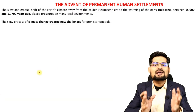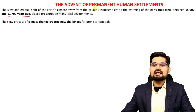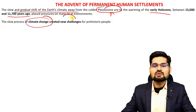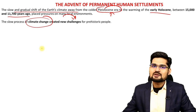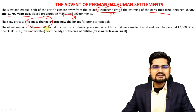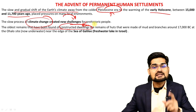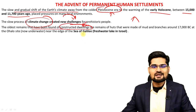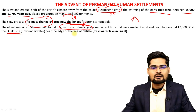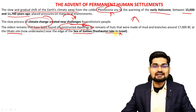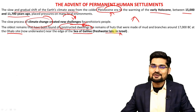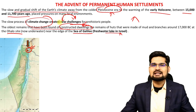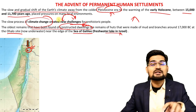The slow and gradual shift of Earth's climate led to the Pleistocene era's end and the beginning of the Holocene, during which climate change led to new land use developments. The oldest remains of constructed dwellings come from approximately 15,000 to 17,000 BCE. These include the Ohalo site and the Sea of Galilee — a freshwater lake in Israel in the Levant region. The people responsible were the Natufians, where the first archaeological evidence of settlers is found.